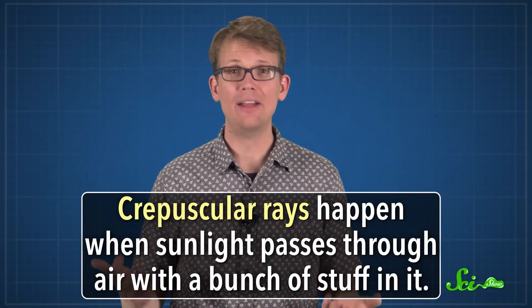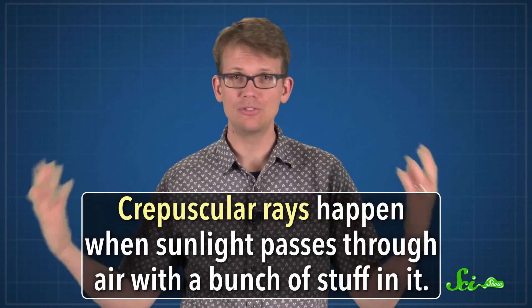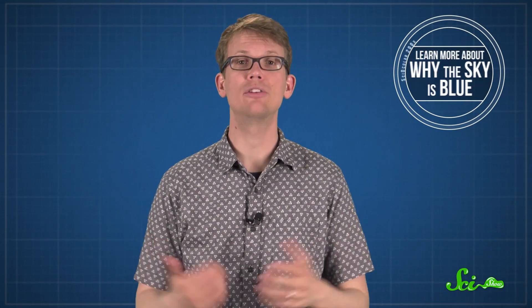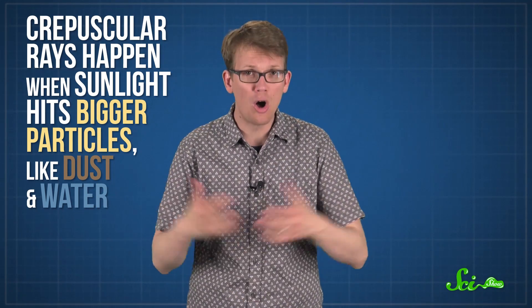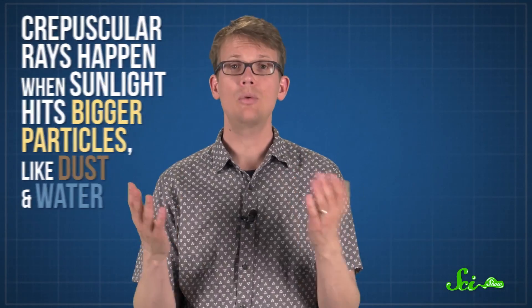Crepuscular rays happen when sunlight passes through air that has a bunch of stuff in it. Sunlight is always bouncing off of stuff in the air. The way it bounces depends on what it's hitting. Nitrogen in the air, for example, scatters the bluer parts of the sun's light, which is why the sky is blue. Crepuscular rays happen when the sunlight hits bigger particles like dust and water, which bounce all the light's colors pretty equally. And when we see all the colors of light at once, we call that white light, which is why a lot of crepuscular rays look white.